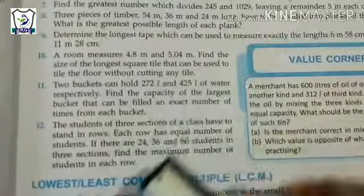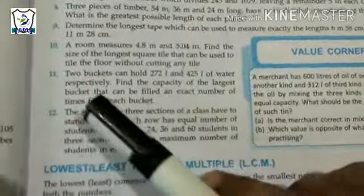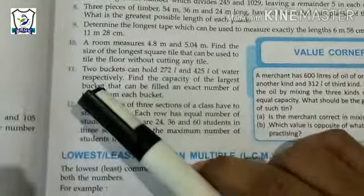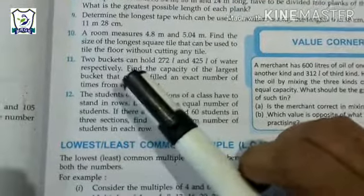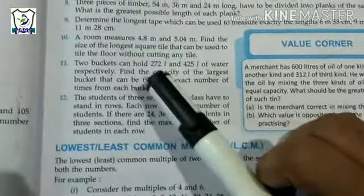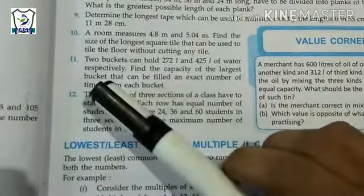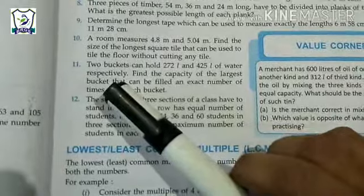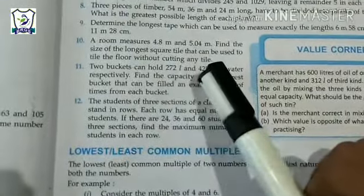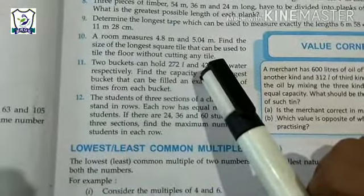Now, eleventh question in Exercise 3.5. What is the question? Two buckets can hold 272 liters and 425 liters of water respectively. Two buckets, one bucket holds one amount, second bucket holds another amount.